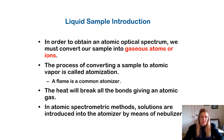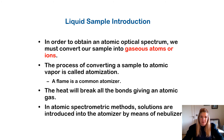For liquid samples, in order to obtain an atomic optical spectrum we must convert the sample into gaseous atoms or ions. The process of converting a sample to atomic vapor is called atomization. The heat breaks all the bonds to give an atomic gas. In atomic spectrum methods, solutions are introduced into the atomizer by means of a nebulizer.